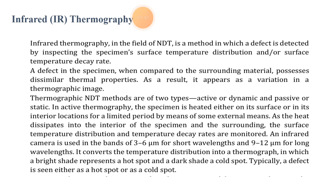In active thermography, the specimen is heated either on its surface or in its interior locations for a limited period by means of some external means. As the heat dissipates into the interior of the specimen and the surrounding, the surface temperature distribution and temperature decay rates are monitored. An infrared camera is used in the bands of 3 to 6 µm for short wavelength and 9 to 12 µm for long wavelength. It converts the temperature distribution into a thermograph, in which a bright shade represents a hot spot and the dark shade a cold spot. Typically, a defect is seen either as a hot spot or as a cold spot.